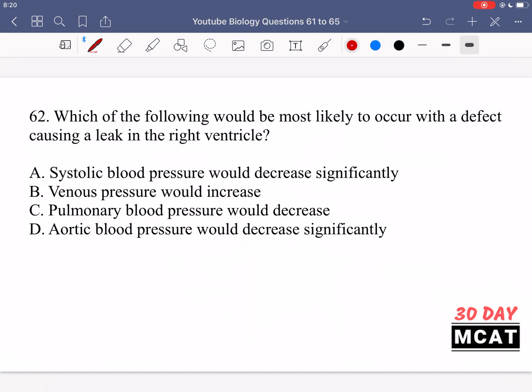In question 62 we're asked which of the following would be most likely to occur with a defect causing a leak in the right ventricle. So we have a defect in the right ventricle. In the heart you should know that the left side of the heart, left atrium and left ventricle, is responsible for the systemic circulatory system and the right side is responsible for the pulmonary system.